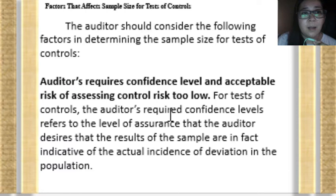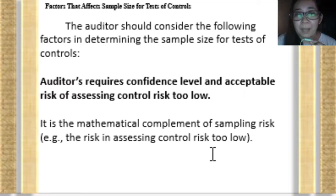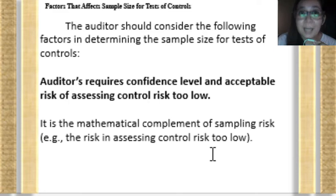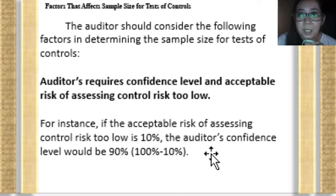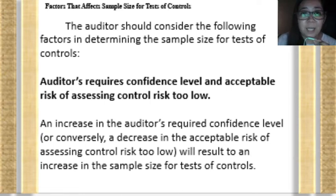The fourth factor is the auditor's required confidence level and the acceptable risk of assessing control risk too low. The confidence level refers to the level of assurance that the auditor desires — that the sample results are indicative of the actual incidence in the population. It is the mathematical complement of sampling risk. For example, if the acceptable risk of assessing control risk too low is 10%, the auditor's confidence level is 90%. An increase in the auditor's required confidence level will result in an increase in sample size, since more samples are needed to determine whether internal controls are effective.